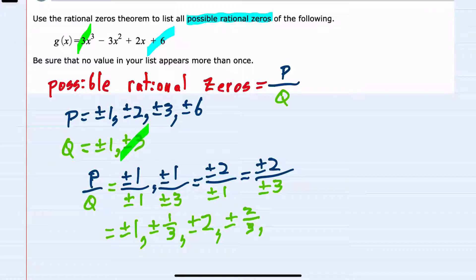That covers the possibility for two. Our next p is three. Starting with the first q, which is one, would give me plus or minus three in the numerator and plus or minus one in the denominator, simplifying to plus or minus 3.